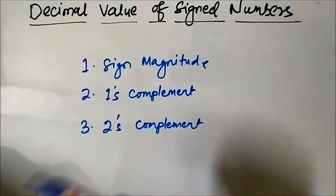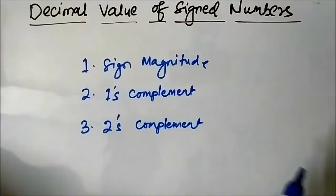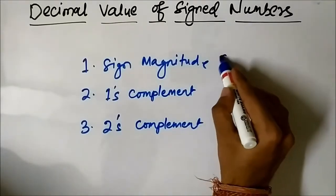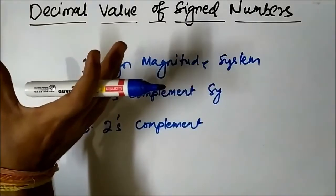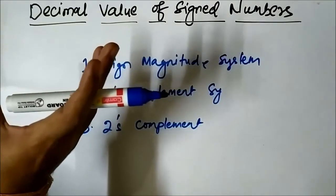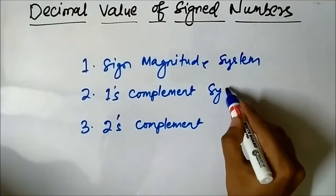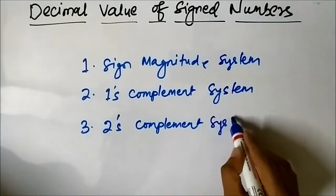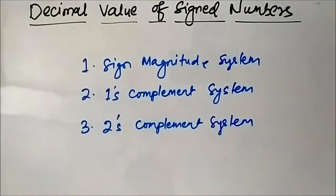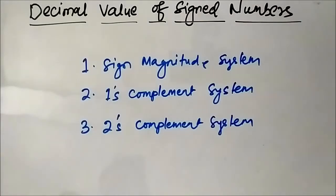The method of approach to determine the decimal value will be different for different systems. In today's video we are going to discuss the sign magnitude system — that is, the calculation of the decimal value of an integer in sign magnitude system. We will discuss the 1s complement and 2s complement systems in separate videos. So today's discussion is about the evaluation of the decimal value of a given signed number in sign magnitude system.